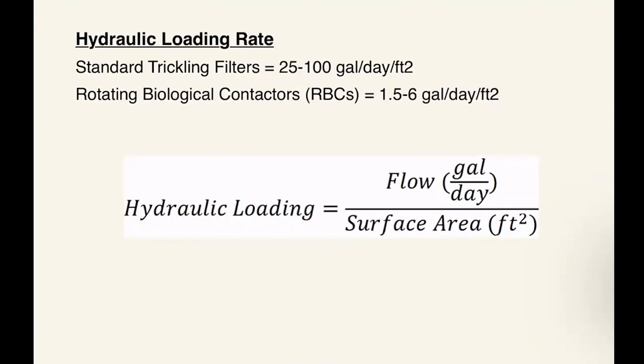The next concept we're going to be talking about is hydraulic loading rates. This is important because this lets us know how much flow certain types of processes can handle. For a standard trickling filter, this is typically between 25 and 100 gallons per day per square foot. For a rotating biological contactor, or RBC, this is typically 1.5 to 6 gallons per day per square foot. The way we calculate this is we take the flow that is coming into the treatment process and divide it by the available surface area that's treating the process. This gives us our hydraulic loading rate in the units of gallons per day per foot square.